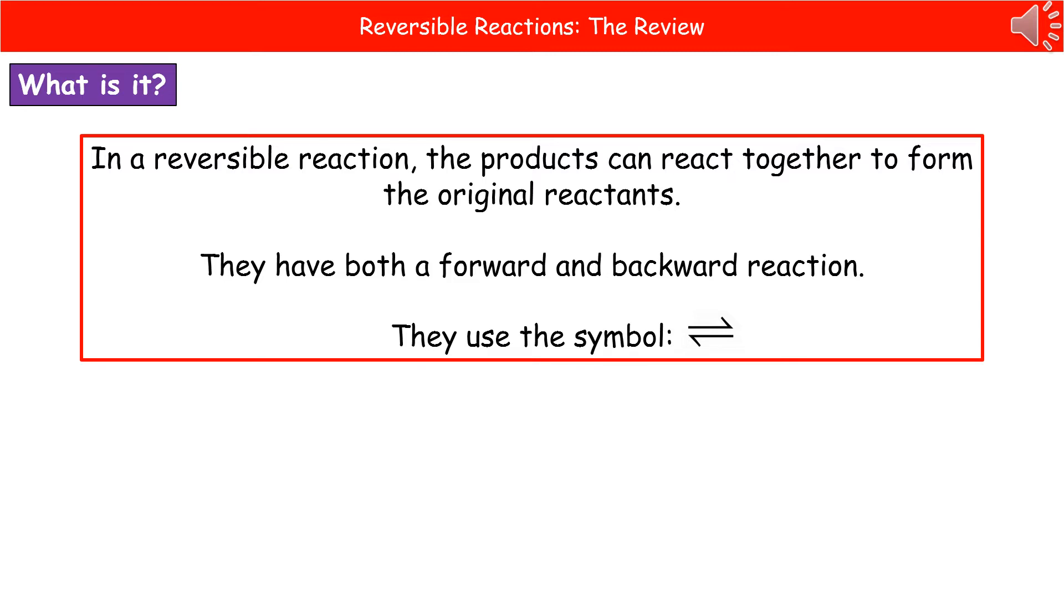Reversible reactions are ones that have both a forward and backward reaction. So this means that where we formed some products through a chemical reaction, then those products can actually react together to form the original reactants once more.